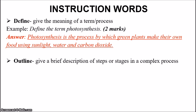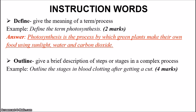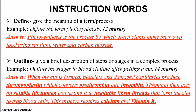The next instruction word: outline. With outline, you give a brief description of steps or stages in a complex process — summarizing the basics. For example, 'outline the stages in blood clotting after getting a cut.' When the cut is formed, platelets and damaged capillaries produce thromboplastin. That thromboplastin converts prothrombin into thrombin. The thrombin acts on soluble fibrinogen, converting it into insoluble fibrin threads, which form the clot trapping blood cells. This process requires calcium and vitamin K.